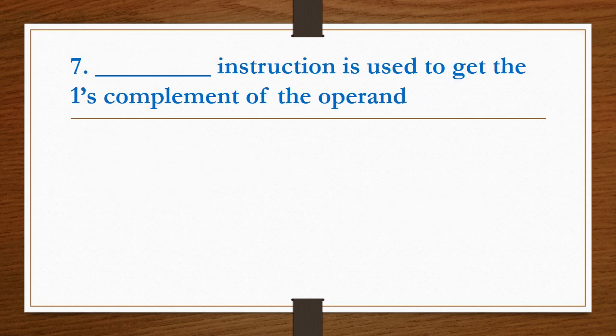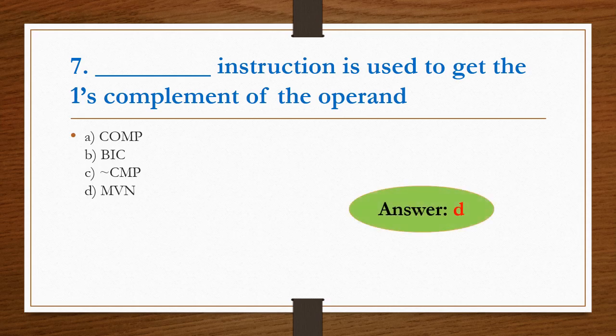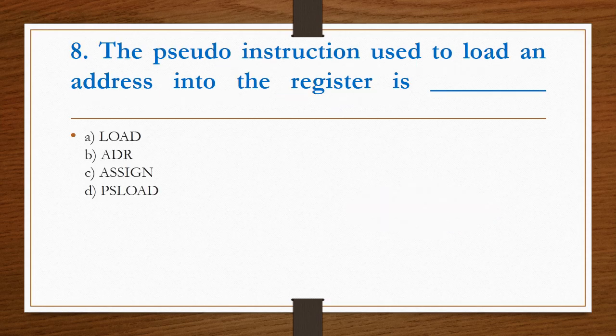Which instruction is used to get one's complement of the operand? This is the instruction used for getting the one's complement. Option D is the right answer. The SIDO instruction used to load an address into the register is ADR. Option B is the right answer.